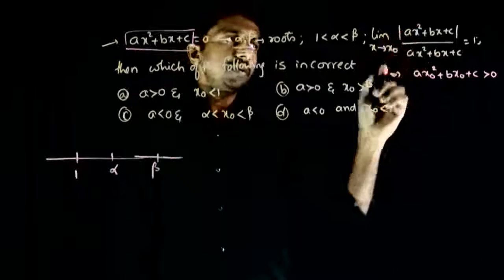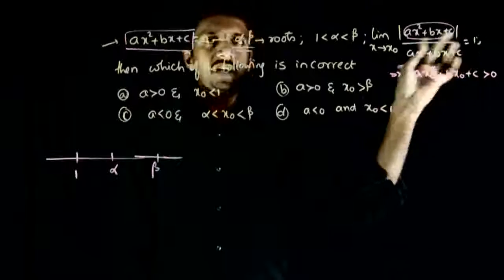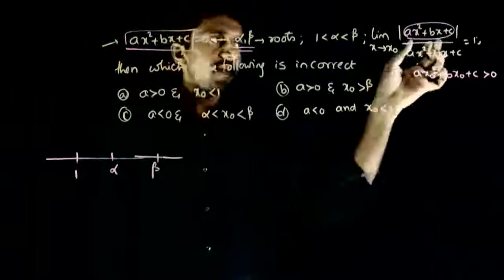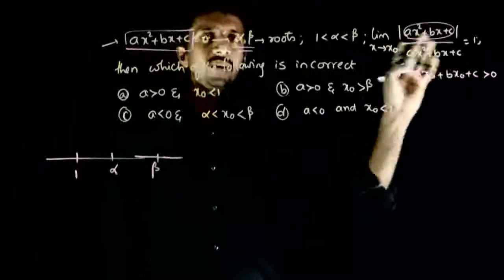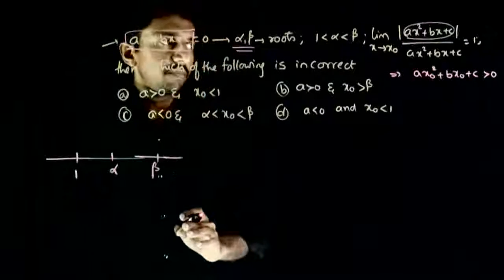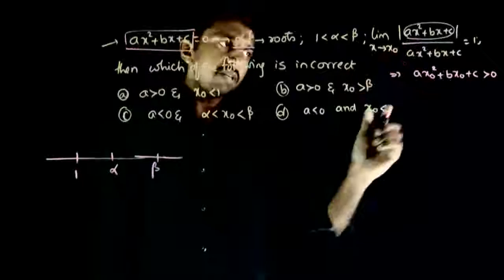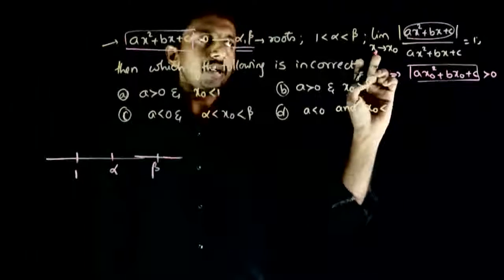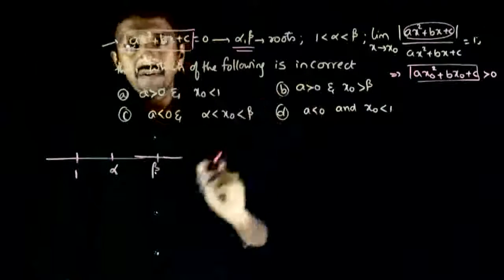If we substitute x0 and this expression is positive, mod of this by this will equal plus one. If this is negative, mod will introduce one more minus, making the limit equal to minus one. So the conclusion is that if you substitute x0 in ax square plus bx plus c, you get a positive value.